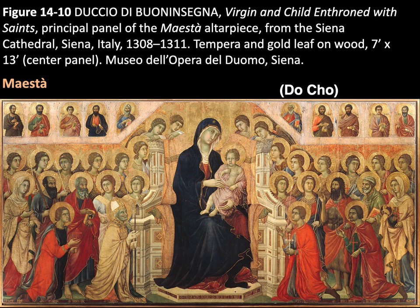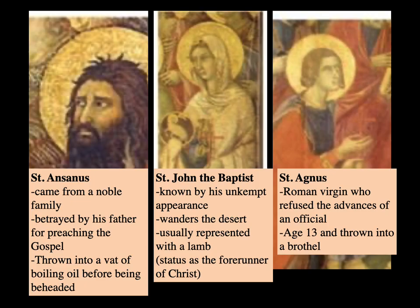The city of Siena believed the Virgin had brought them victory over the Florentines at battle. St. Ansanus came from a noble family; he was betrayed by his father for preaching the gospel and then thrown into a vat of boiling oil before being beheaded. St. John the Baptist is known by his unkempt appearance — he wanders the desert and is usually represented with a lamb, and has the status of a forerunner of Christ. St. Agnes was a Roman virgin who refused the advances of an official and, at the age of 13, was thrown into a brothel.